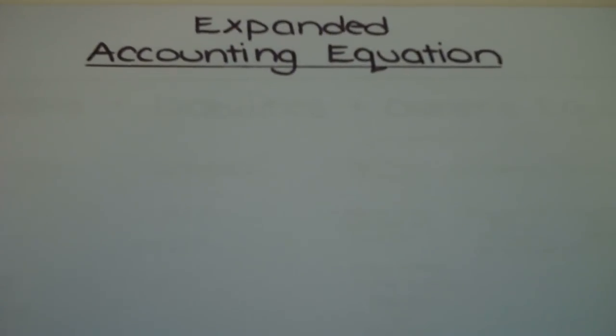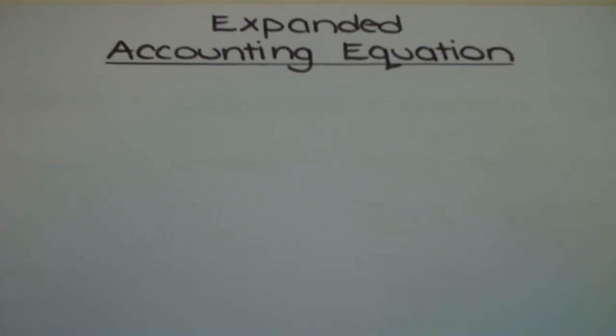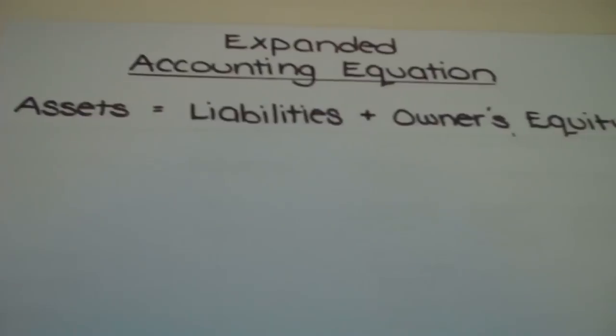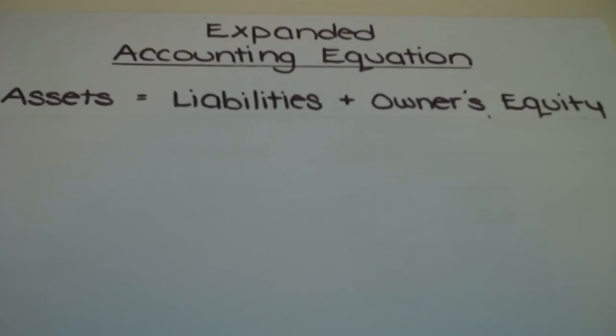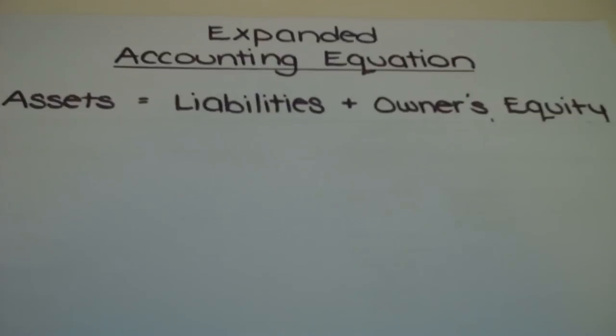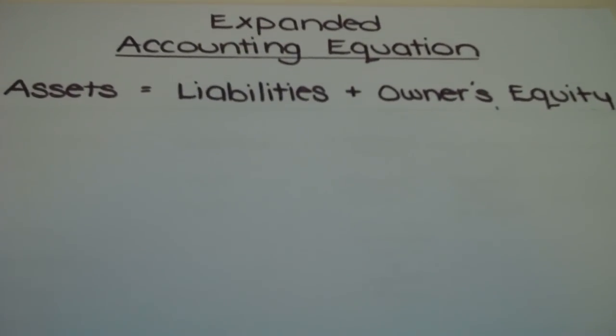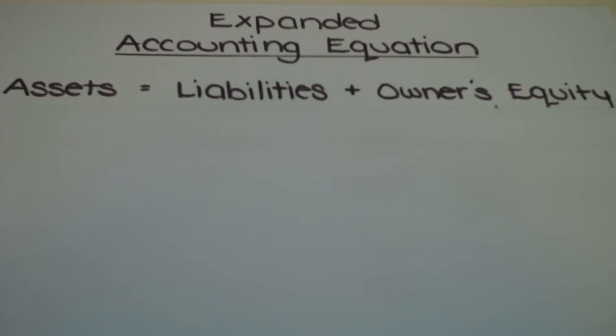So let's start with what we already know, our assets equal liabilities plus owner's equity. Knowing that all business transactions are summarized into this formula and the accounting equation must always remain in balance.